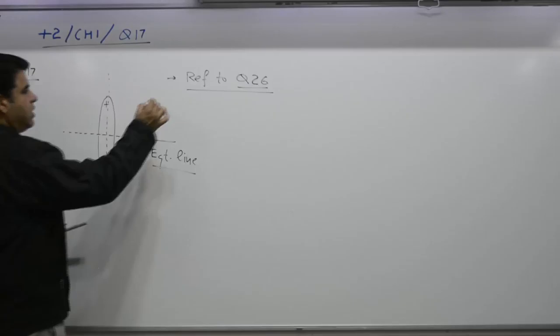This perpendicular bisector is termed as the equatorial line. For this derivation, refer to question number 26 in the same chapter.